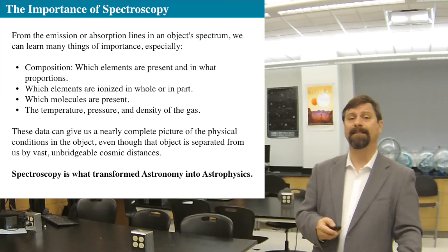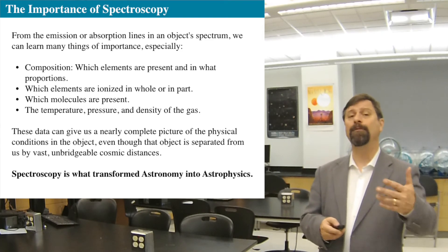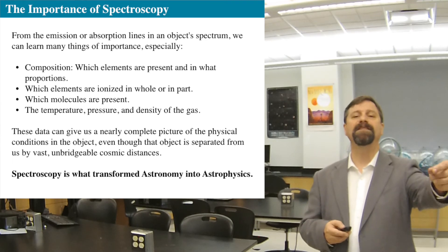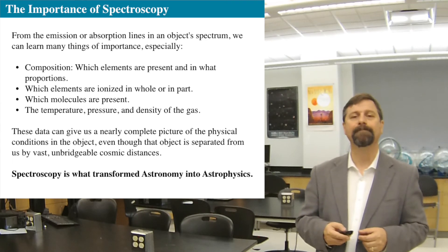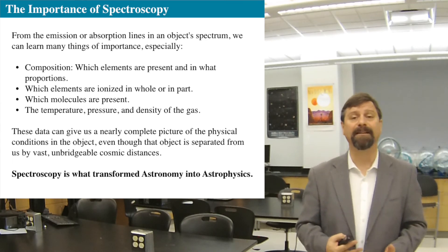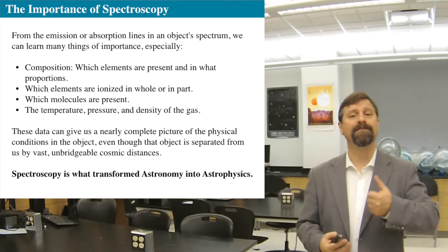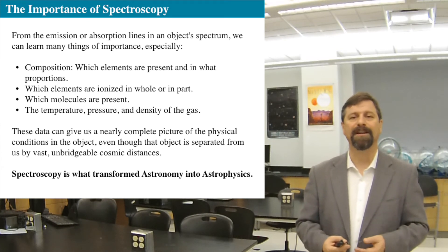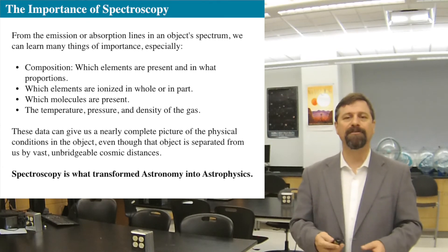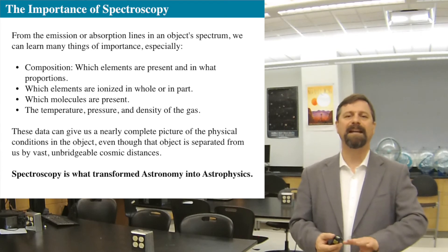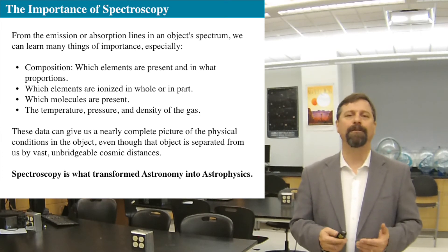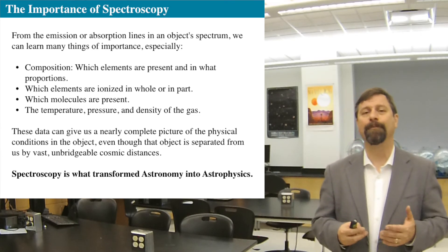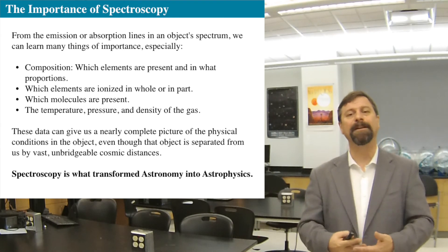This gives us the physical data about what's happening at the conditions of the matter when the light was emitted. We can understand pressure, density, temperature, and composition — and now we can do physics. The physics then allows us to understand what's really going on.